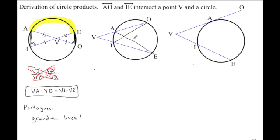So it's congruent to this angle right here that also terminates A and I. So the two angles that intercept the same arc are congruent there. And the shared angle V is congruent too.